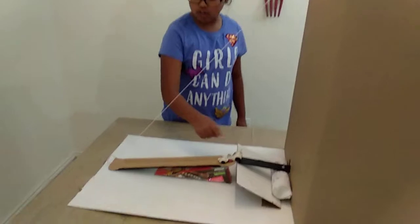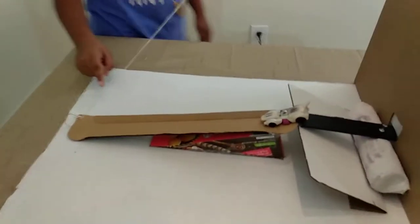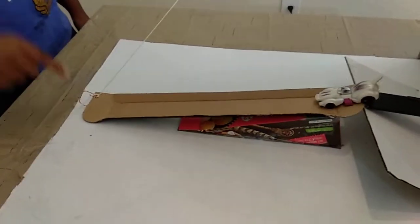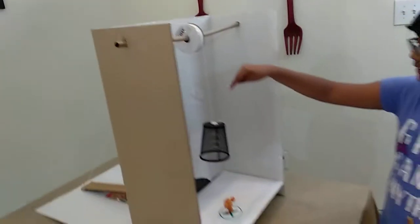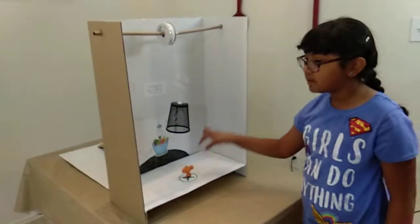making this car go down from the inclined plane, and then it will hit this wedge that is connected to the pulley. That will release the cage and will trap the monkey.